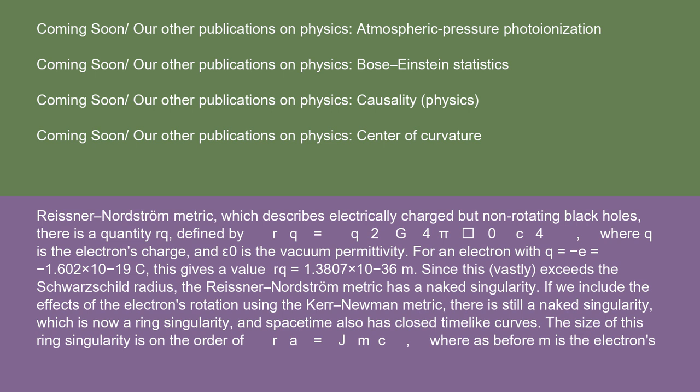For an electron with Q = -e = -1.602 × 10⁻¹⁹ C, this gives a value RQ = 1.3807 × 10⁻³⁶ m. Since this vastly exceeds the Schwarzschild radius, the Reissner-Nordström metric has a naked singularity.